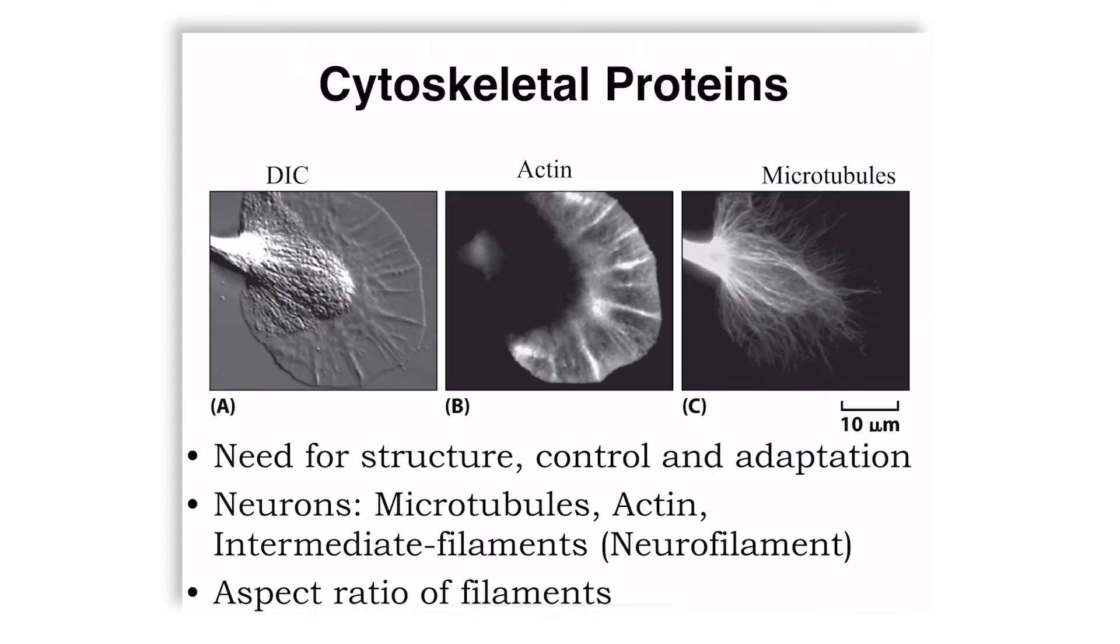For this, we're going to today talk about the so-called endoskeleton of the cells or cytoskeleton. This is the skeleton that is inside the cells. We are not going to talk about the extracellular matrix and some other structures that also give structure because they are not always as ubiquitous.